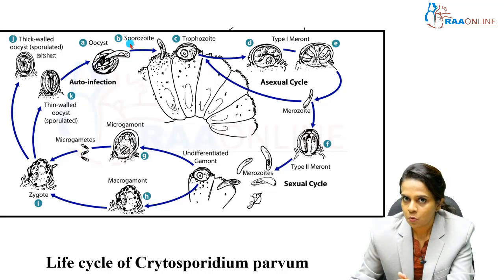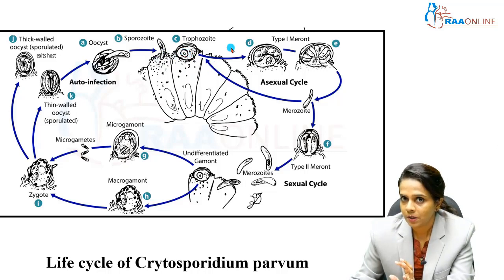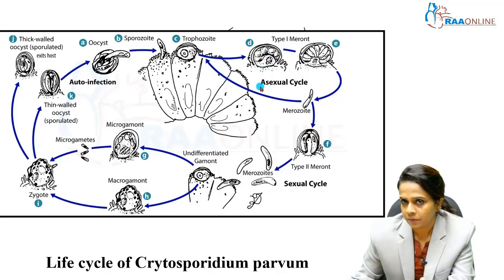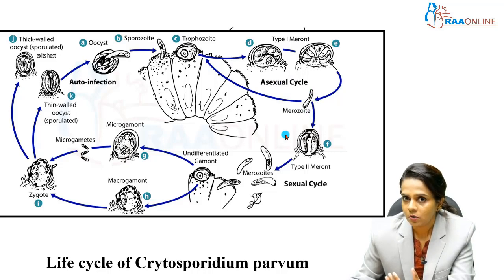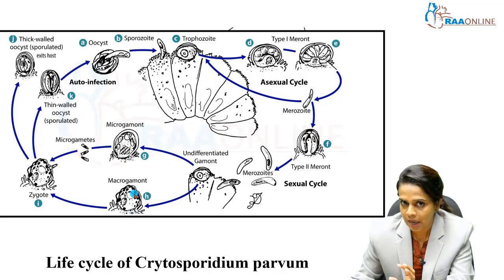The sporozoites are released and transform into trophozoites. These trophozoites invade the brush border epithelium of the small intestine and form a parasitophorous vacuole near the microvillai surface. Schizogony then occurs, releasing merozoids. These merozoids undergo the sexual cycle — microgametes and macrogametes are formed. This process is gametogony.